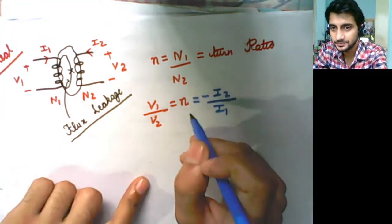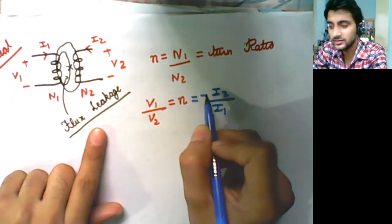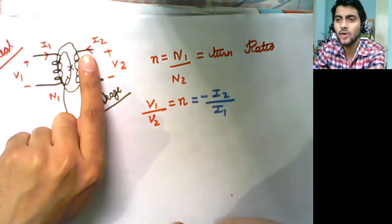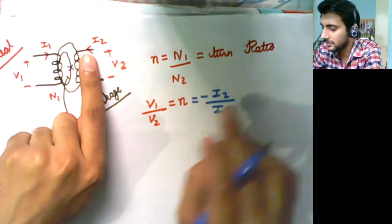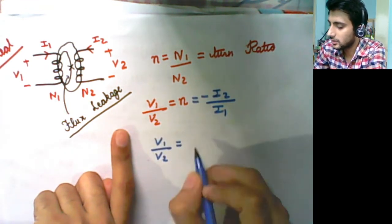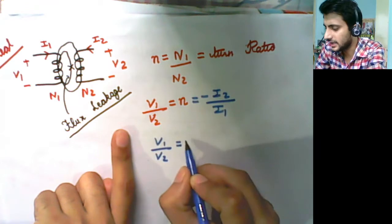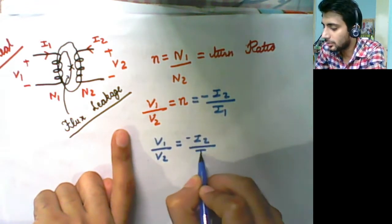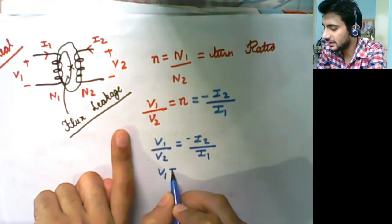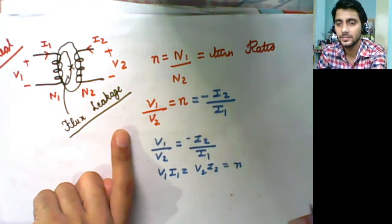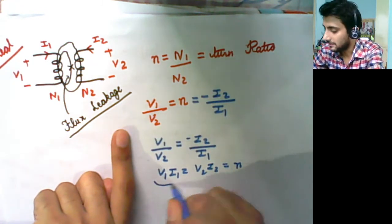The negative sign in the current relationship is taken because the direction of current is opposite — it doesn't carry any other meaning. From these ratios, V1/V2 = N1/N2 and I2/I1 = −N, we can verify that V1·I1 = V2·I2, confirming power is the same on both sides. This equals N — that's how we write it. Power is the same.